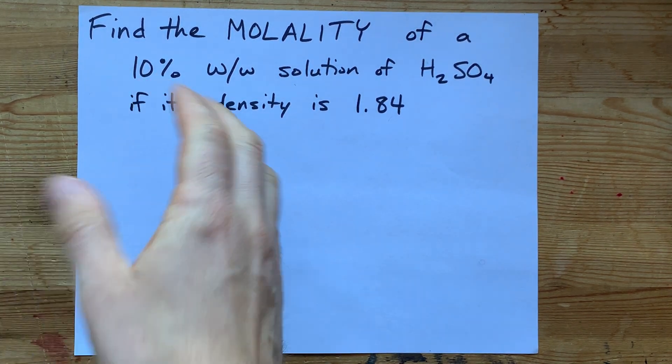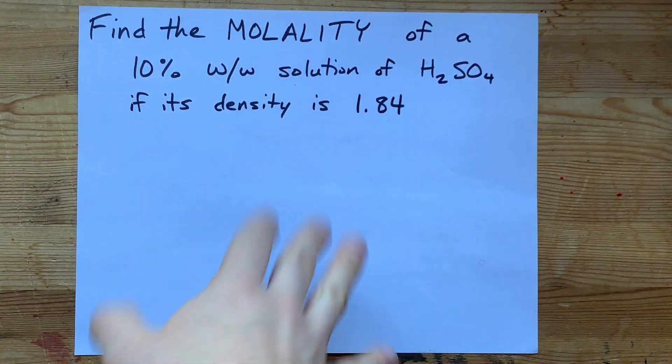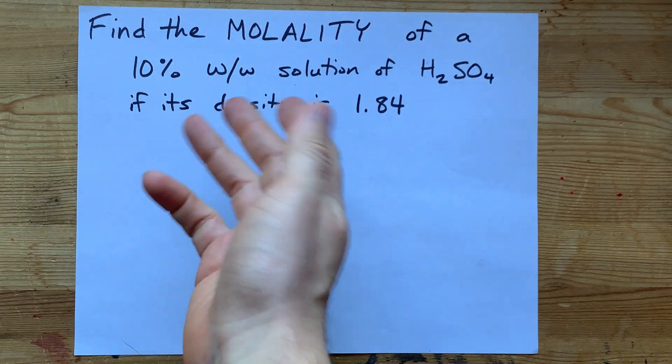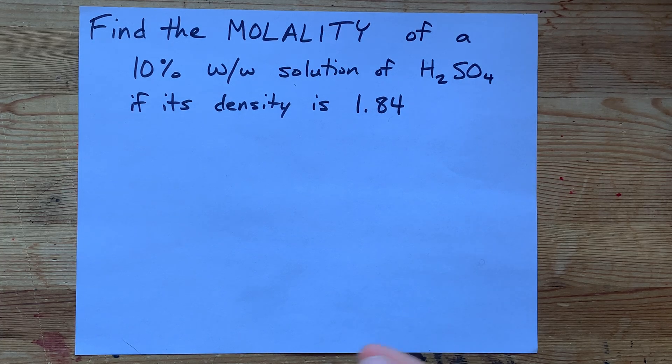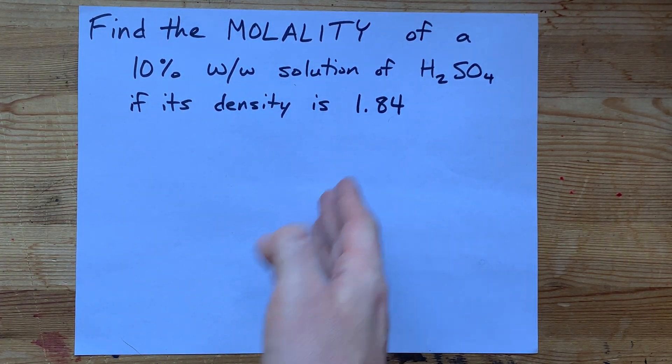A student asked to help find the molality of a solution that's 10% by mass or by weight of H2SO4 sulfuric acid, and they were given the density is 1.84.